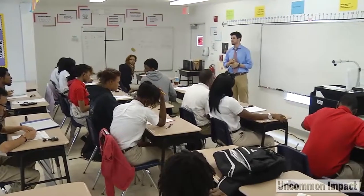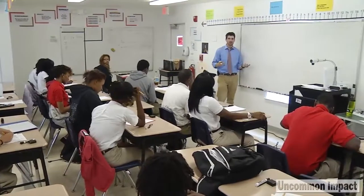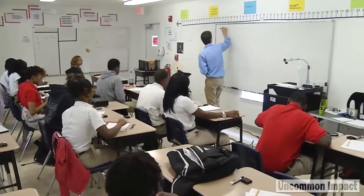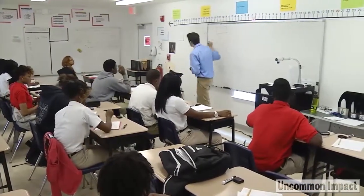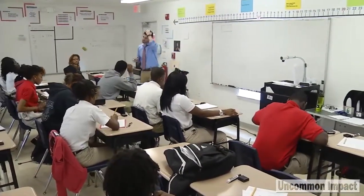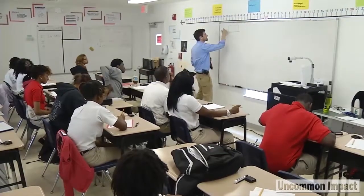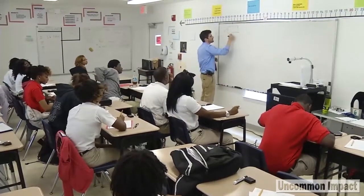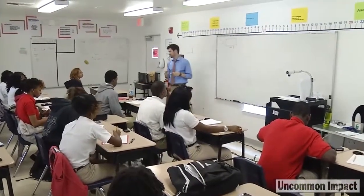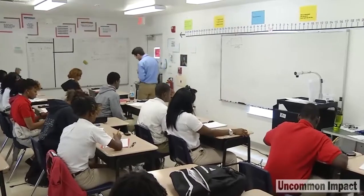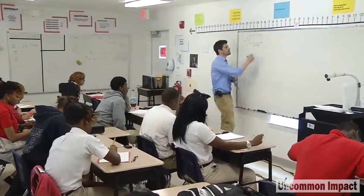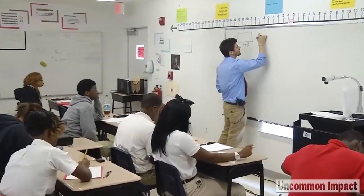The one I wanted to go over was the very first one. We have a rectangle. What are the dimensions of it, Lamani? X minus 1 and x plus 3. What's the other piece of information we're given, Tevin? That the area is 32 inches. Area is 32 inches squared.